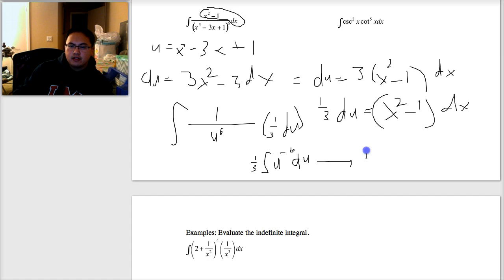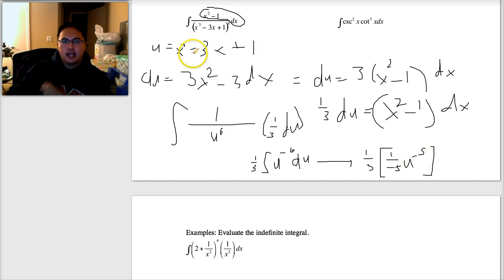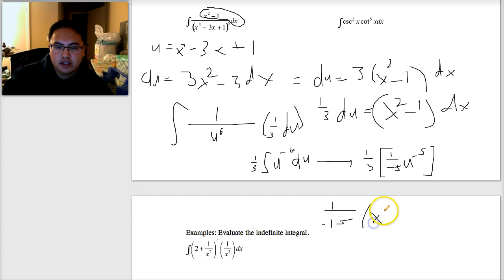Now it's something I can take the antiderivative. Remember I add 1 and divide by it. So if I add 1, this becomes negative 5, and I'll divide by negative 5. So 1 over negative 5, U to the negative 5. Technically I'm done, but I need to put the x's back into the problem. So it's going to be multiplying this. This becomes 1 over negative 15. And then this inside part here will become x to the third minus 3x plus 1 to the negative 5th power.